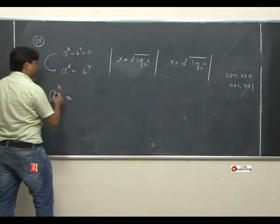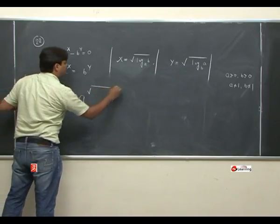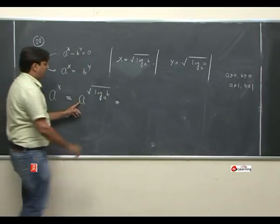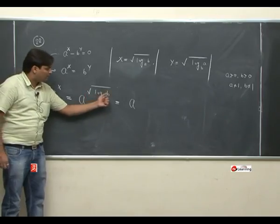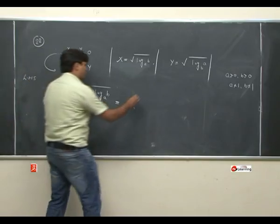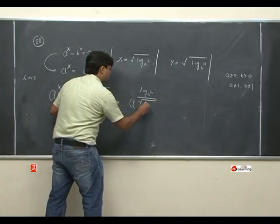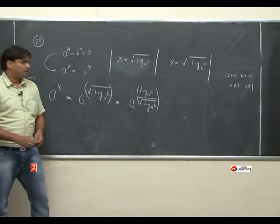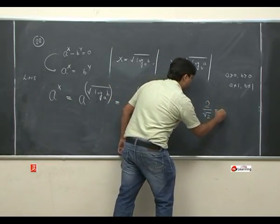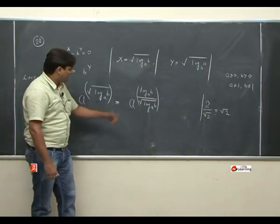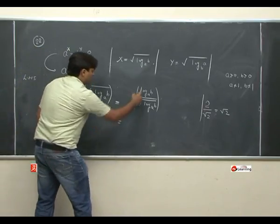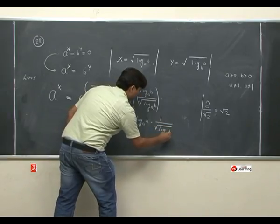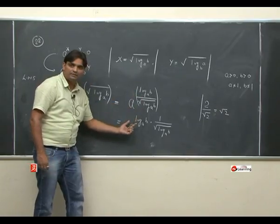LHS को हमने consider कर लिया। X के place पर रखते हैं: A की पावर √(log B base A). इसके बाद वाला step — ध्यान देना। A की पावर √(log B base A). क्या मैं इस number को ऐसा arrange कर सकता हूँ? जैसे 2 upon root 2 = root 2. उसी तरीके से इस number को भी arrange कर सकते हैं।